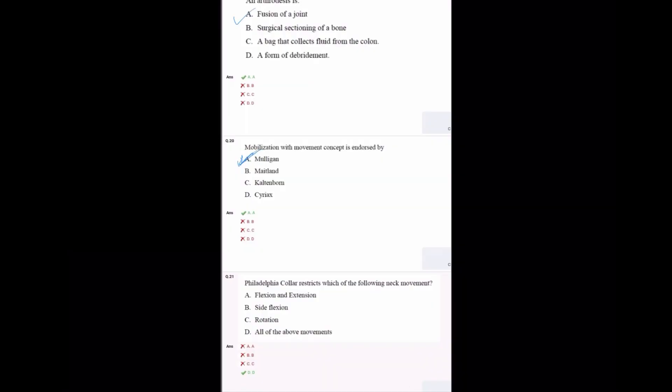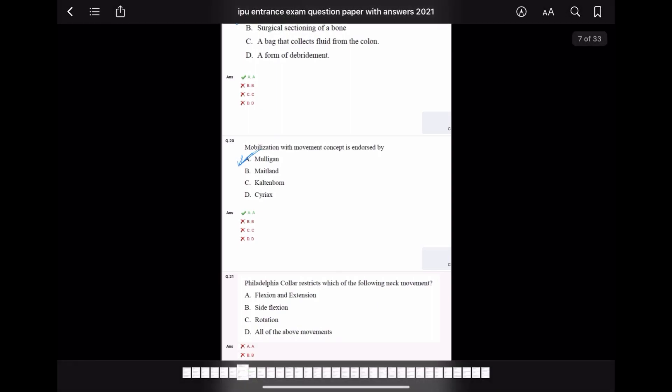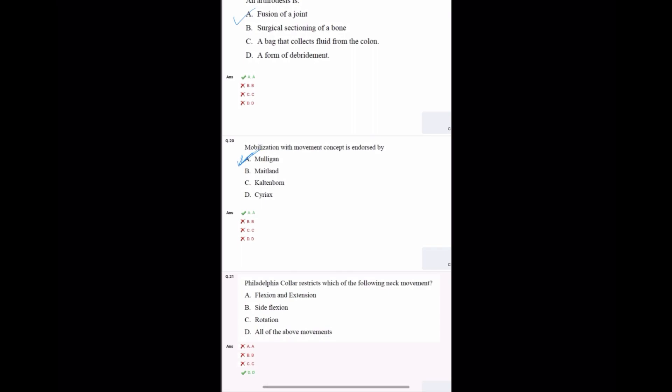Hello everyone, today we will continue with question number 21 of IPO entrance exam of 2021. Question 21: Philadelphia collar restricts which of the following neck movements?